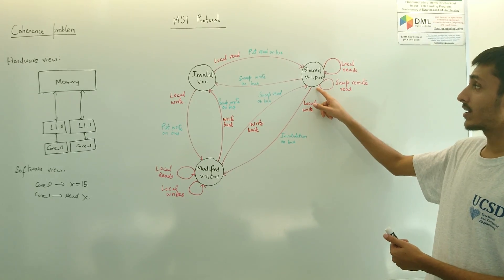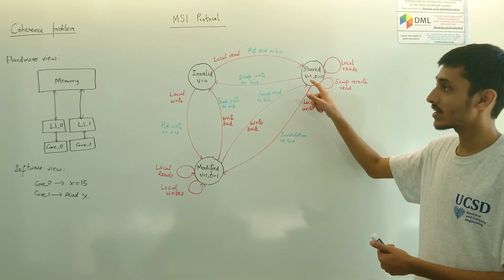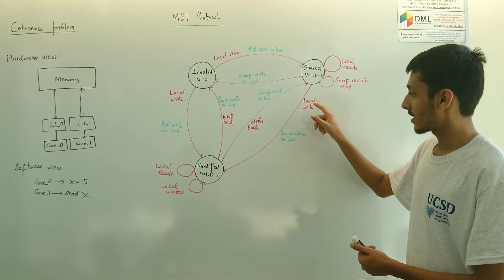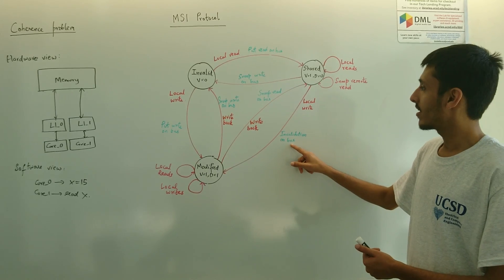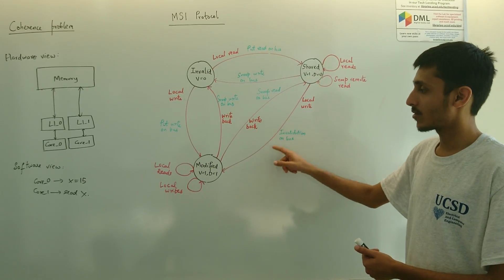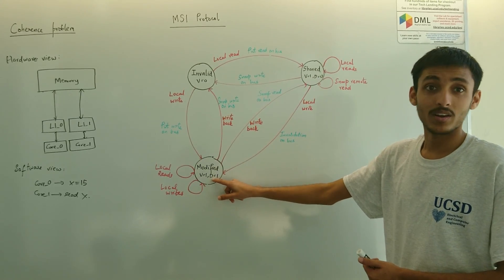Similarly, if you have a local write and the data line was on shared state, what we will be doing is invalidating all other copies of that cache line and ensuring that this shared line moves to a modified state because it now contains a dirty value.